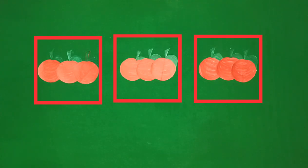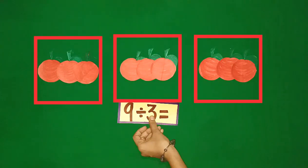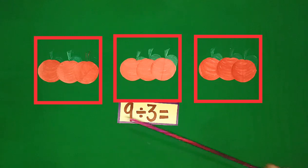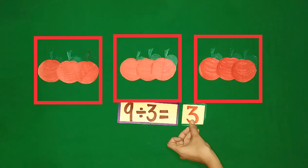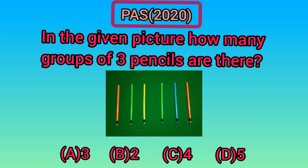So, students, it means when we divide 9 apples into groups of 3, we get 3 groups.